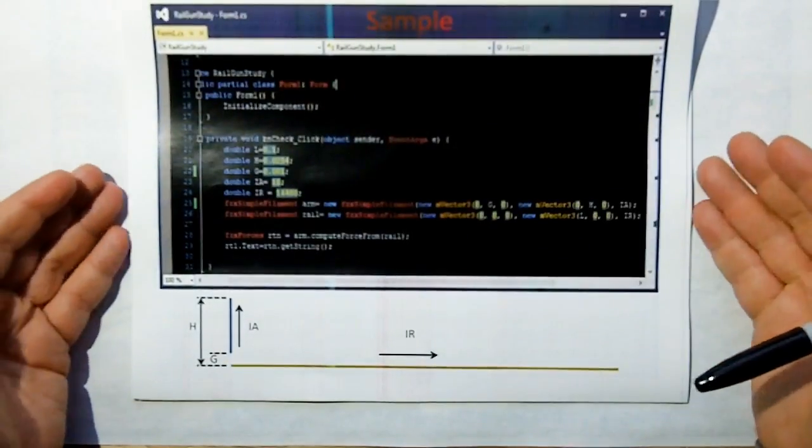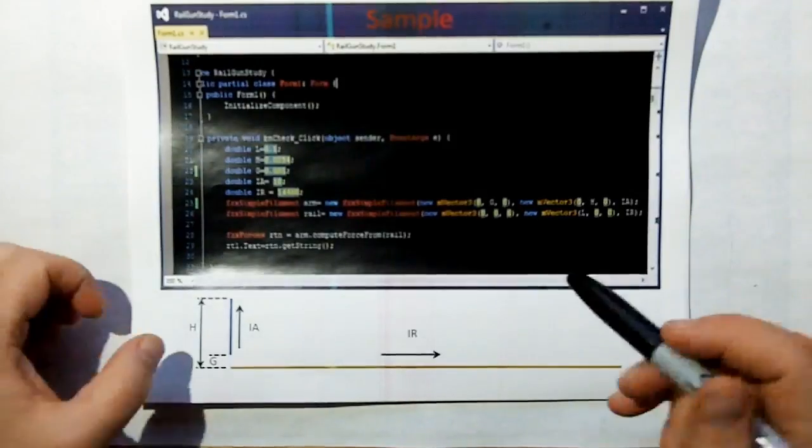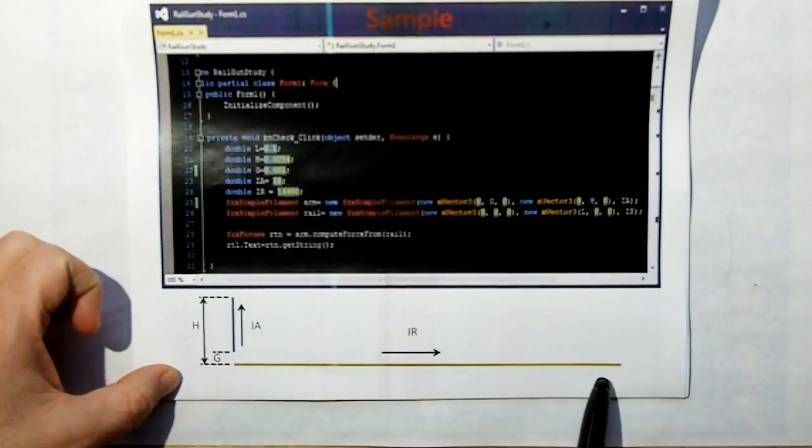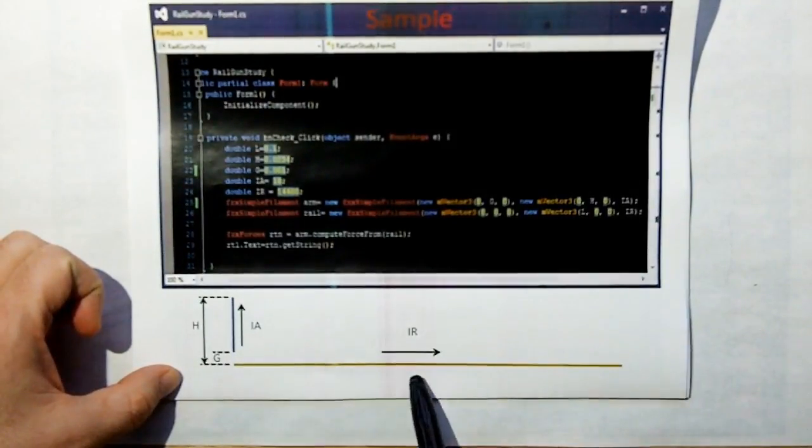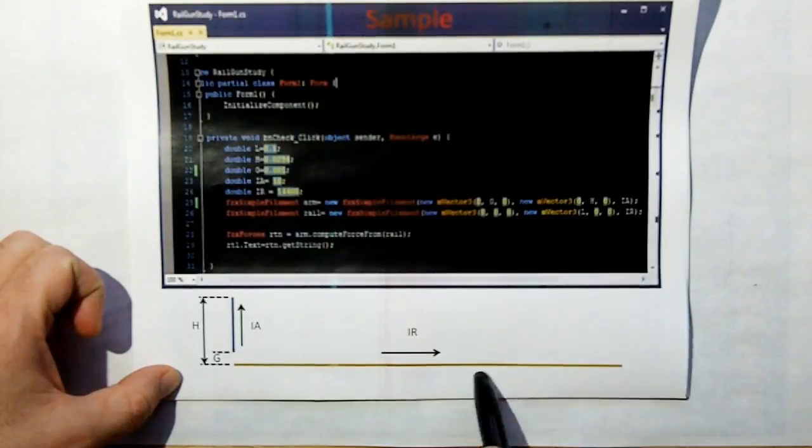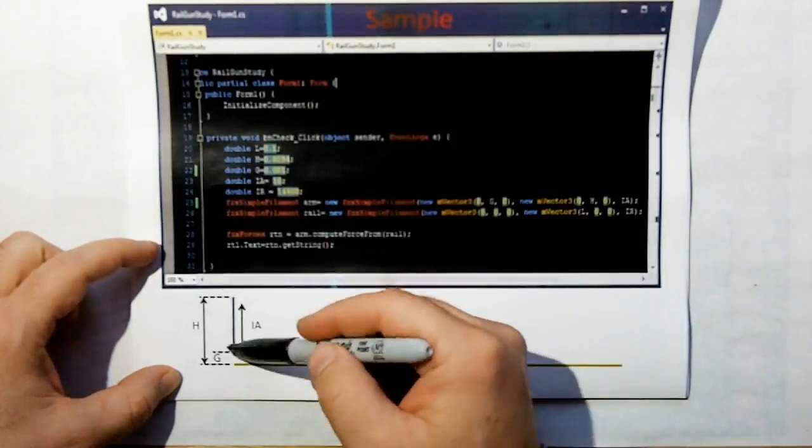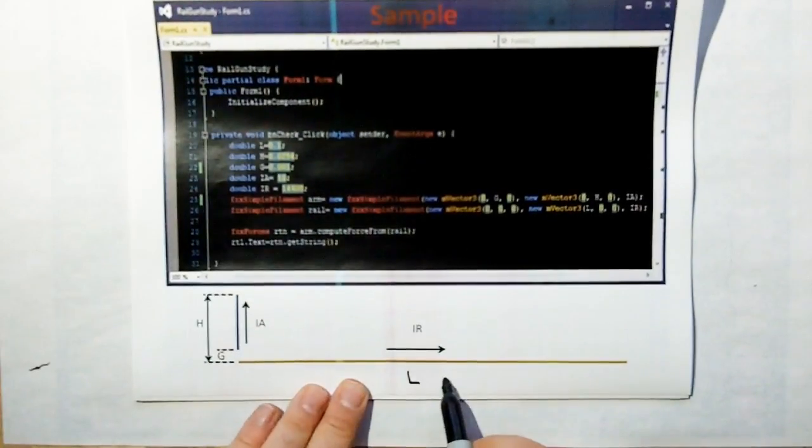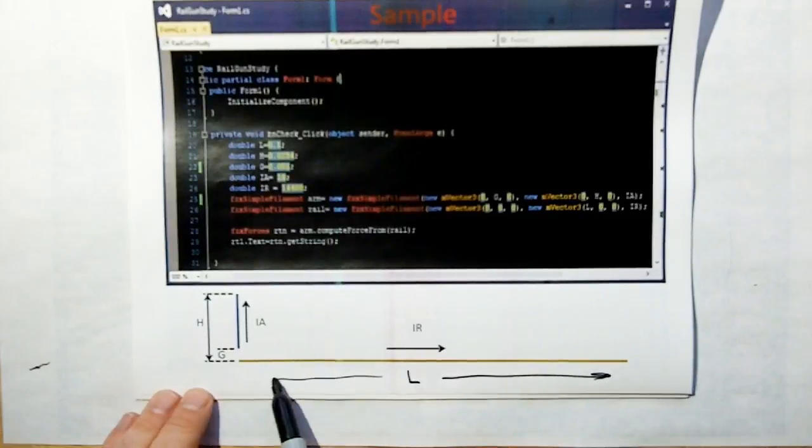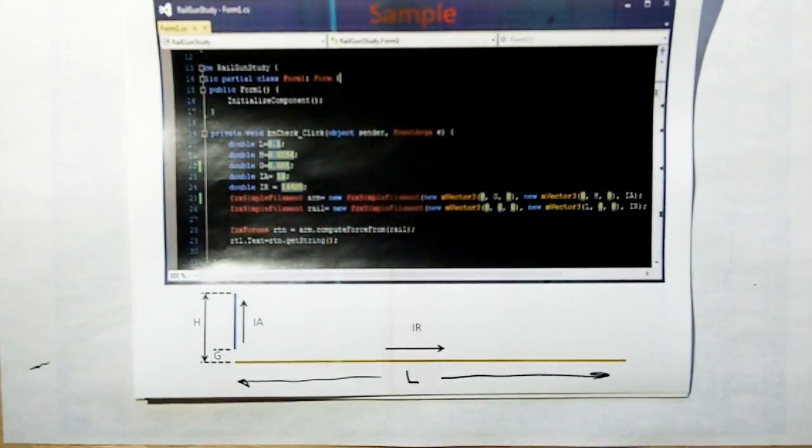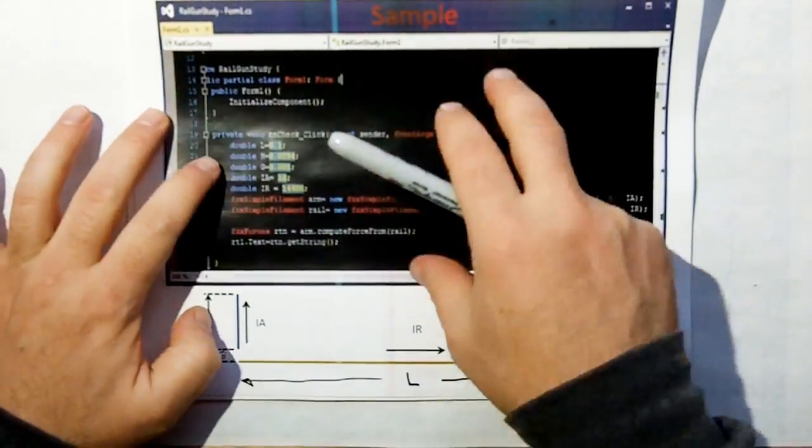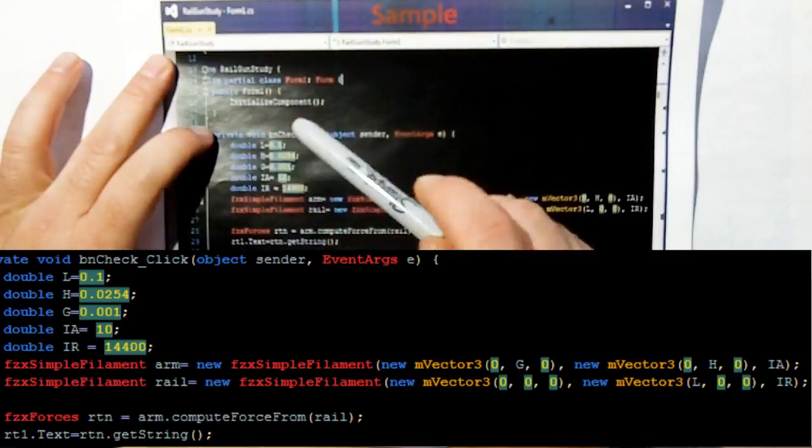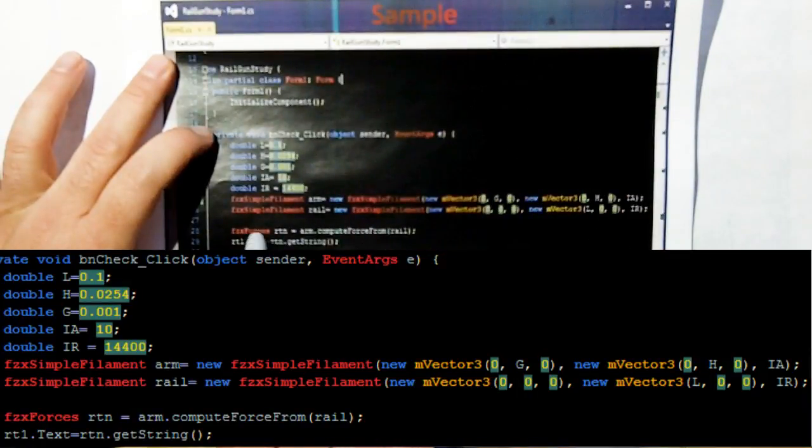So what I have here from the Railgun: we have a length of conductor which would be the filament or the edge current of a magnet or the rail of a real railgun, and then the armature with a gap and the height and this would be the length. I forgot to put that in there.